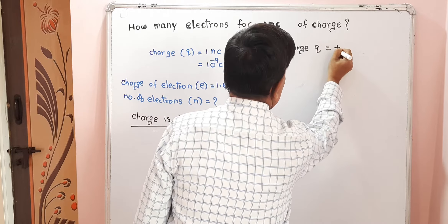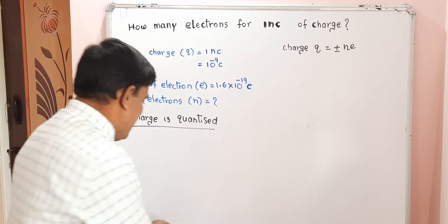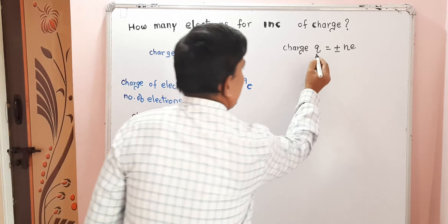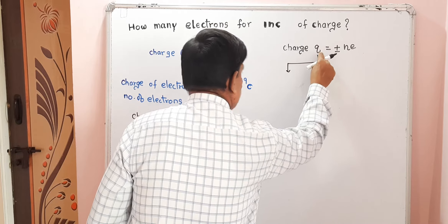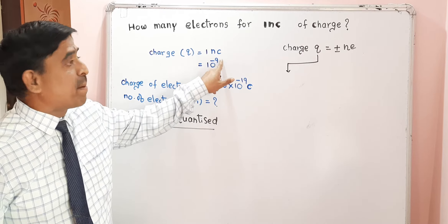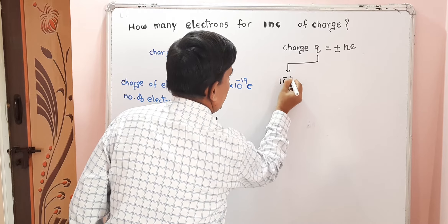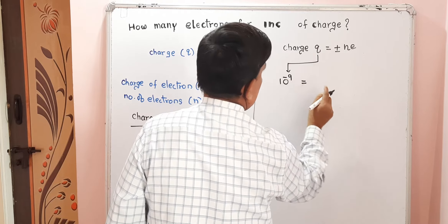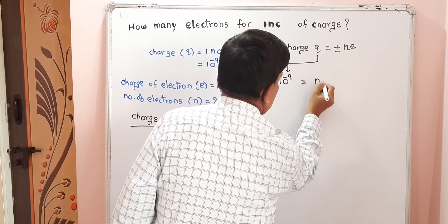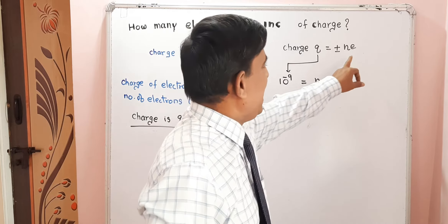The formula is Q is equal to N into E. Here Q is the charge, given as 10 power minus 9 coulomb. N is the number of electrons, which we don't know. E is the charge of electron, equal to 1.6 into 10 power minus 19 coulomb. Since we need a number, there is no need for plus or minus.